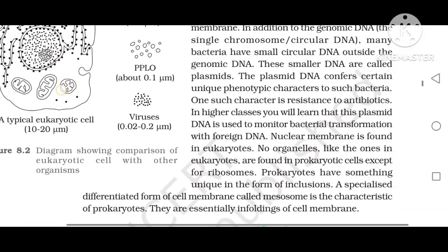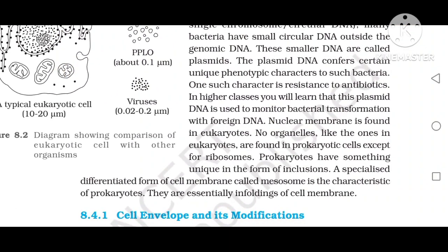In higher classes, you will learn that plasmid DNA is used to monitor bacterial transformations with foreign DNA. Nuclear membrane is found in eukaryotes only. No organelles like those in eukaryotes are found in prokaryotic cells. Except for ribosomes, prokaryotes have something unique in the form of inclusions. A specialized differentiated form of cell membrane called mesosomes is characteristic of prokaryotes; they are essentially enfoldments of the cell membrane.